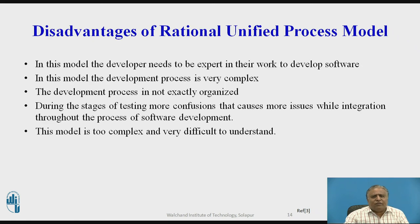Disadvantages of Rational Unified Process Model: In this model, the developer needs to be expert in their work to develop software, meaning more skillful, experienced, and expert persons are required. In this model, the development process is complex and very difficult. This development process is not exactly organized. During the stage of testing, more confusions cause more issues while integration throughout the process of software development. This model is too complex and very difficult to understand.